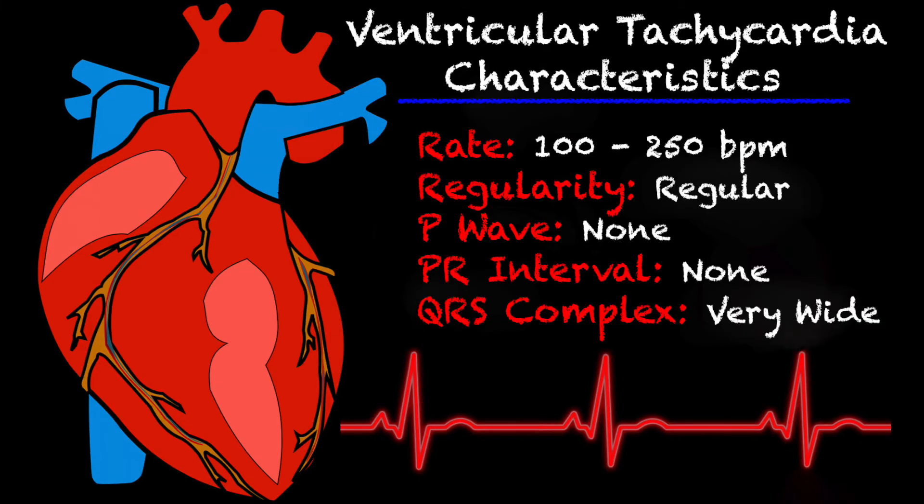Looking at some characteristics of VTAC: your rate is going to be between 100 to 250 beats per minute, and usually it's going to be on the more rapid end of that range. Your regularity is regular, P waves are not present, PR interval is not present, and your QRS complexes are very wide.